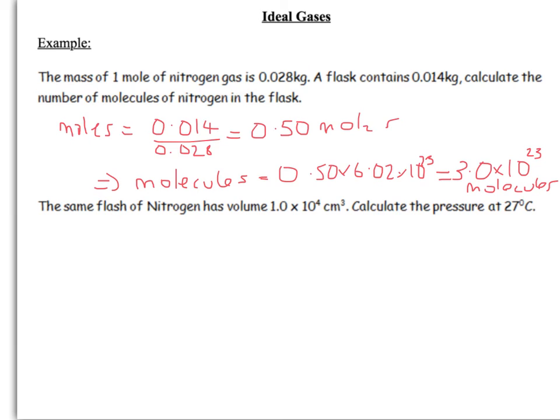Let's say we've got half a mole, essentially. Same flask. A flask of nitrogen has a volume of 1.0 times 10 to the 4 centimetres cubed. Calculate the pressure at 27 degrees. We're going to be using our ideal gas equation here.